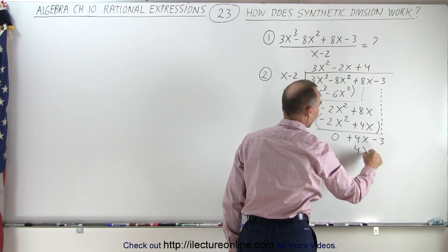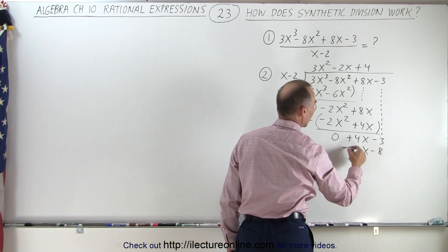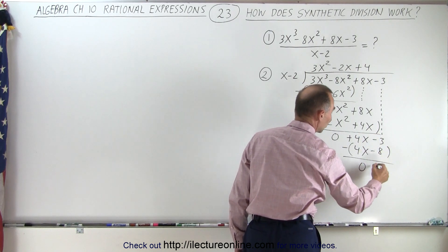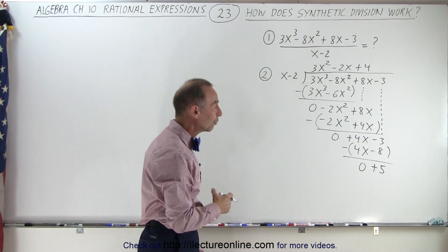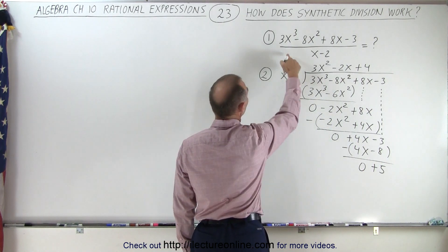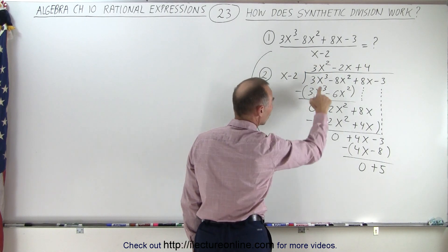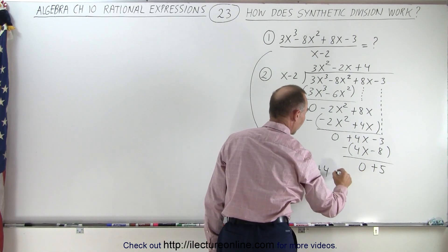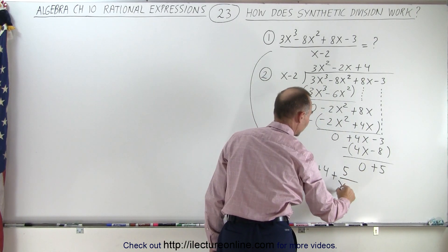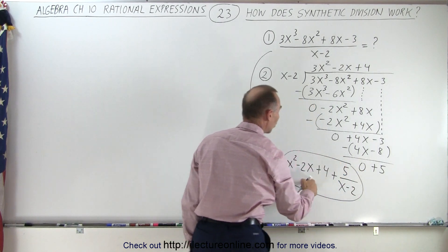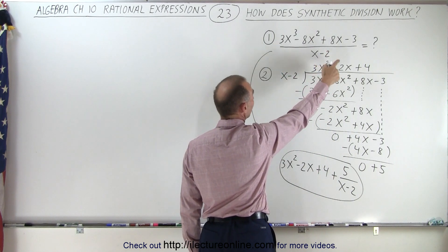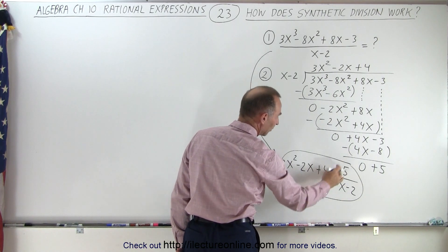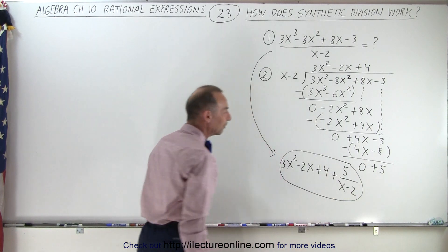So plus 4 times x gives us a plus 4x, and plus 4 times negative 2 gives us negative 8. Then we subtract: 4x minus 4x is 0, and negative 3 minus negative 8 gives us a positive 5. Notice we have a remainder, which means the result is 3x squared minus 2x plus 4, with a remainder of plus 5 divided by x minus 2. So the quotient is 3x squared minus 2x plus 4, plus remainder 5 over divisor x minus 2.